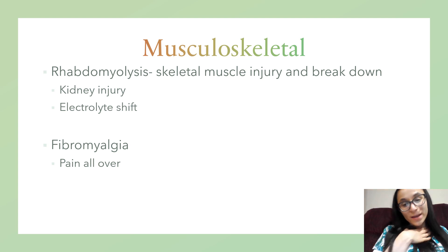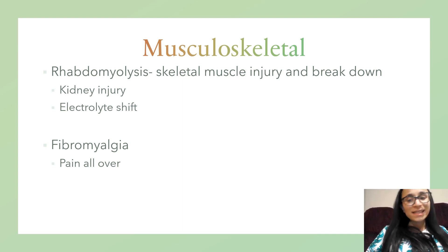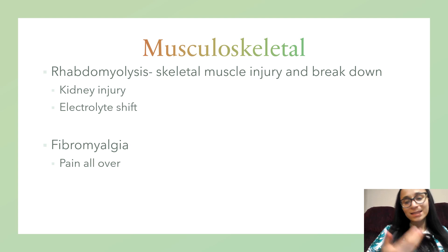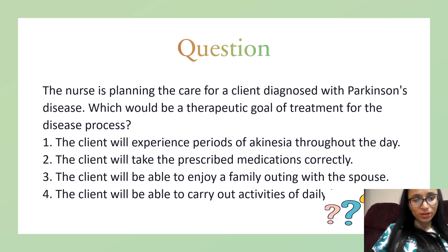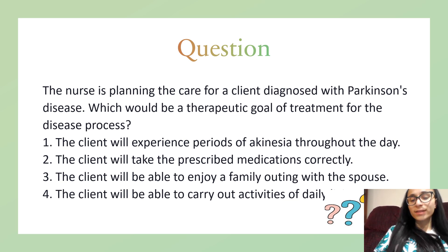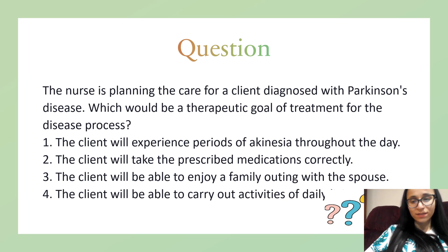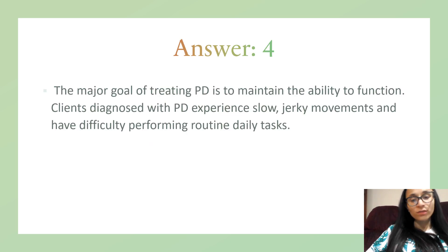Fibromyalgia is a chronic condition causing widespread pain throughout the body. Symptoms include multiple tender points, fatigue, sleep disturbances, and emotional distress. Treat the symptoms with muscle relaxants, narcotics, and NSAIDs as appropriate. Practice question: the therapeutic goal for Parkinson's disease treatment is to maintain function and activities of daily living — being able to carry out ADLs.